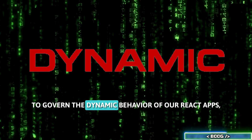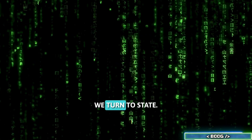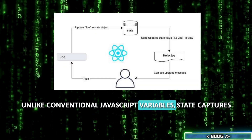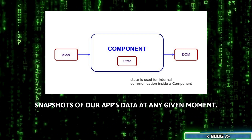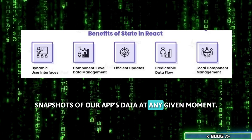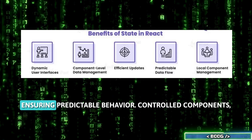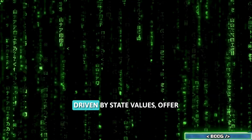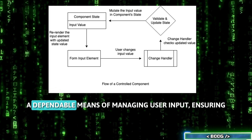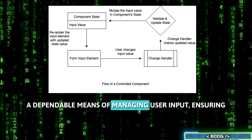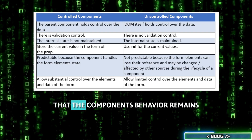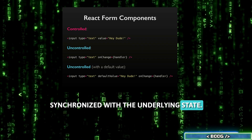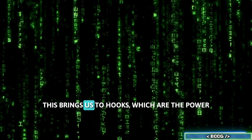To govern the dynamic behavior of our React apps, we turn to state. Unlike conventional JavaScript variables, state captures snapshots of our app's data at any given moment, ensuring predictable behavior. Controlled components, driven by state values, offer a dependable means of managing user input, ensuring that the component's behavior remains synchronized with the underlying state.